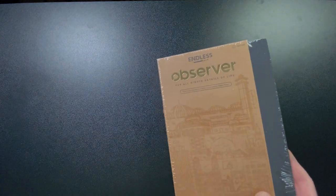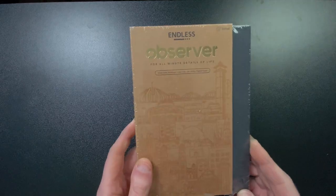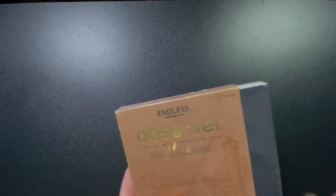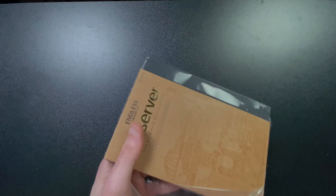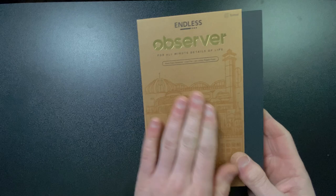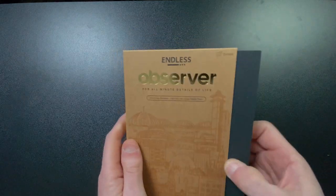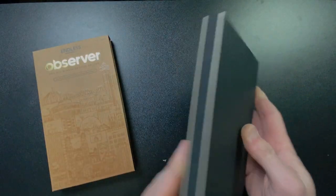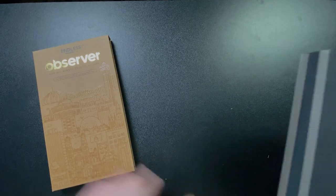I really enjoy the way that Endless packages their products. I think it is quite attractive. We've got a cardboard sleeve with a nice embossed design on there. And inside is the Observer notebook. This is supposed to be a lay-flat notebook. You can see that it does indeed lay flat. The pages are numbered, which is quite nice.